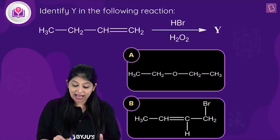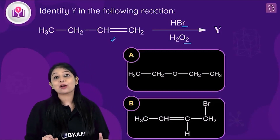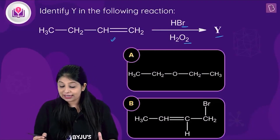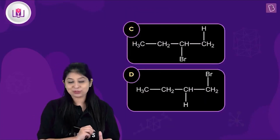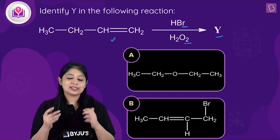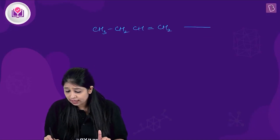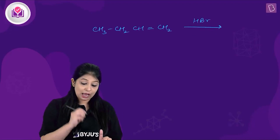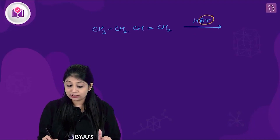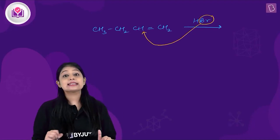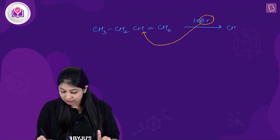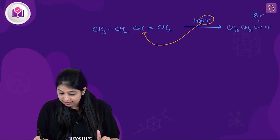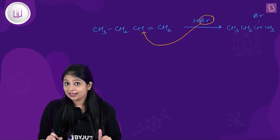Let's look at this next question. We are given an unsymmetrical alkene and we are adding HBr in the presence of peroxide (H₂O₂), and we have to find the product. Without H₂O₂, the negative part of the addendum gets added to the doubly bonded carbon atom which has fewer hydrogen atoms — giving CH₃CH₂CHBrCH₃, which is Markovnikov's product.